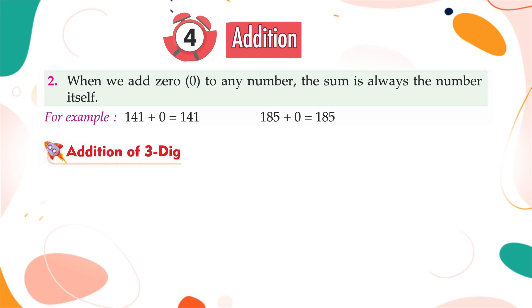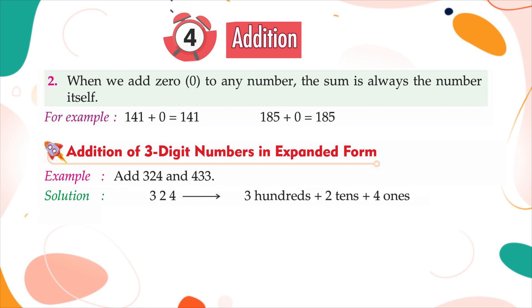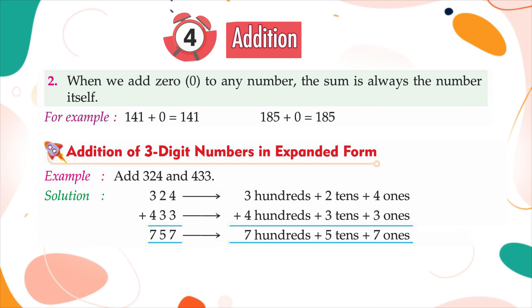Addition of three-digit numbers in expanded form. Example: Add 324 and 433. Solution: 3 hundreds plus 2 tens plus 4 ones plus 4 hundreds plus 3 tens plus 3 ones is equal to 7 hundreds plus 5 tens plus 7 ones. So, 324 plus 433 is equal to 757.